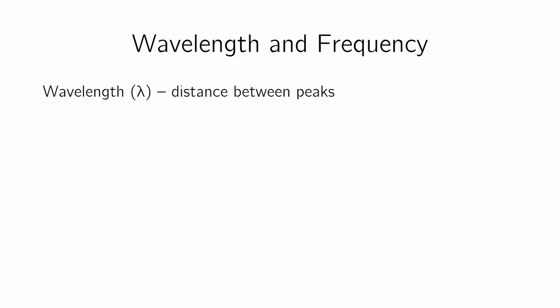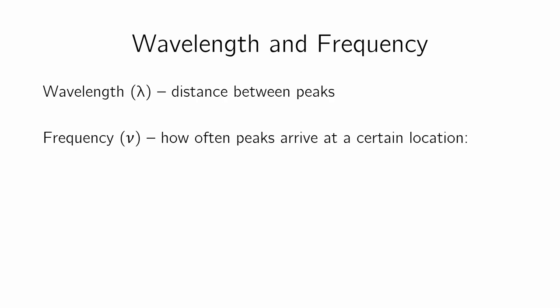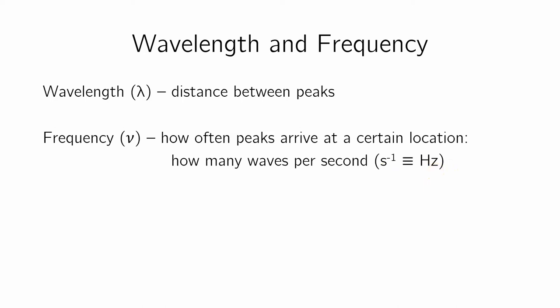Wavelength is the distance between two peaks. Frequency is how often the peaks arrive at a certain location — defined as how many waves per second. So I'd count the number of peaks I see in one second. That is defined as a hertz (Hz). Hertz simply means one per second; so 10 hertz means 10 peaks per second. You can use it for anything that repeats — not just waves. If you're counting cars driving by, how many per second, you can write that as hertz.